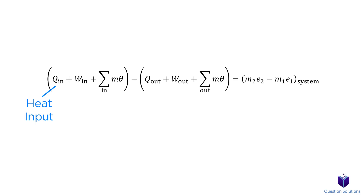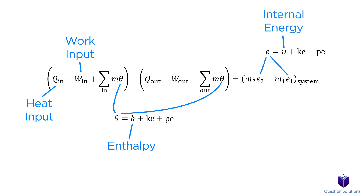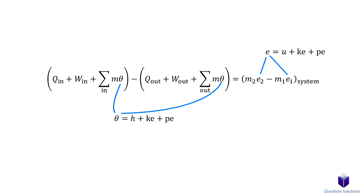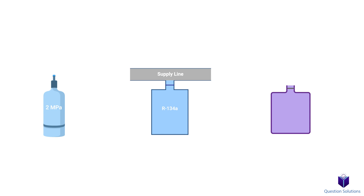Keeping this in mind, we can write the full energy balance equation for a uniform flow system. Here, this is heat input and this is work input. The theta symbol represents the energy of a fluid stream. The lowercase e represents the energy of the non-flowing fluid inside the control volume per unit mass. H represents enthalpy, U represents internal energy, and KE and PE represent kinetic and potential energy. Whenever kinetic and potential energy change is negligible, we can simplify by cancelling out those terms, leaving just enthalpy and internal energy. So our big equation can be simplified, and when we cover a few examples, it should give you a better idea.